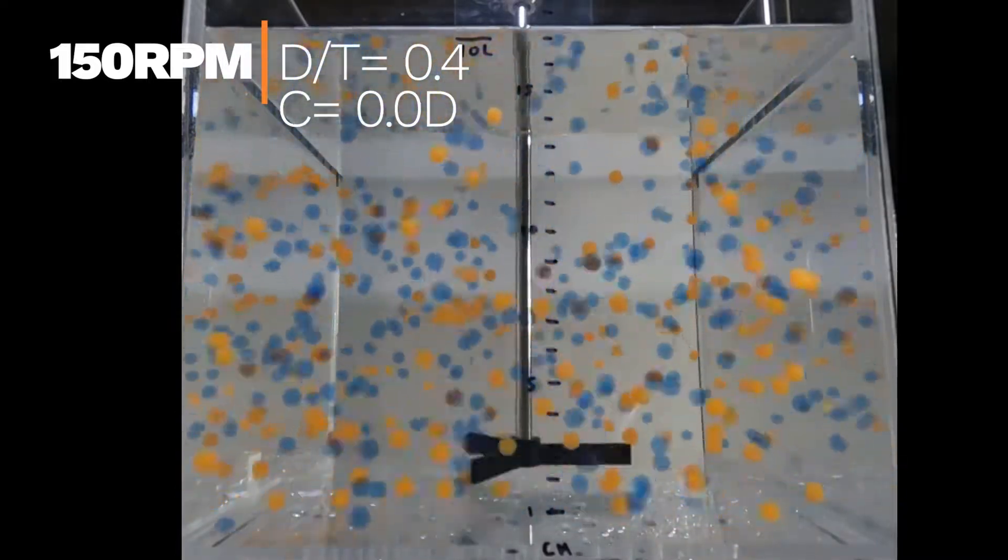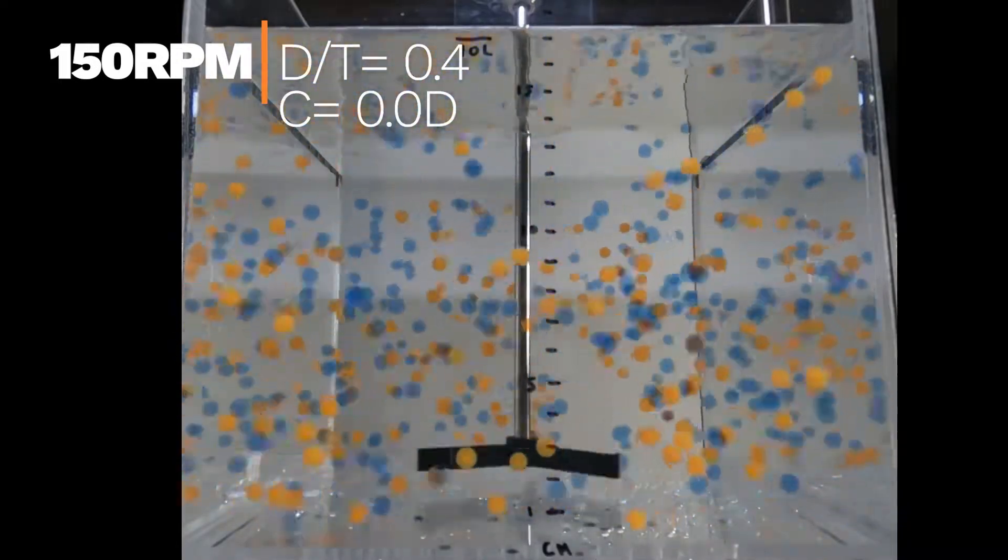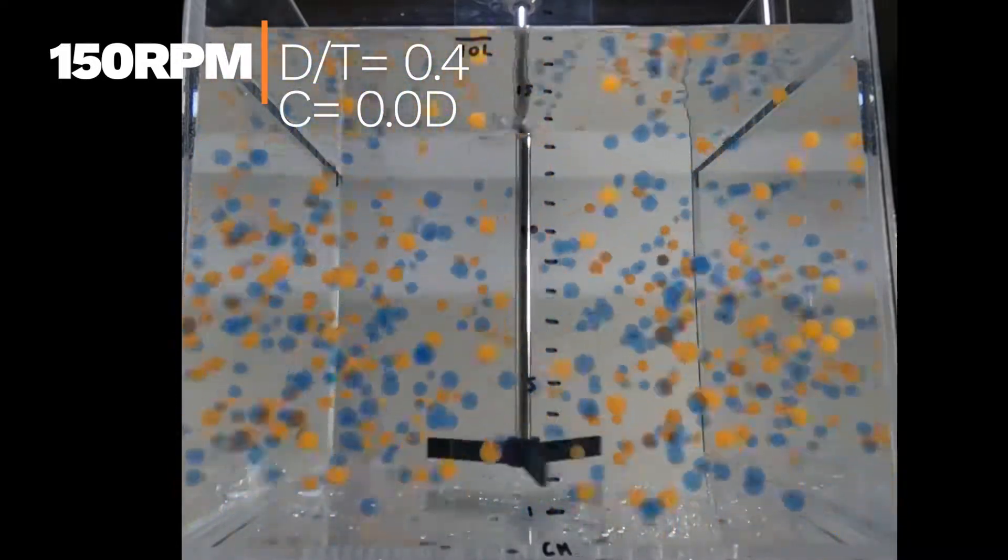Though more blades promote more agitation, since this agitator type is high shear, it will also create more contaminants and damage hash.